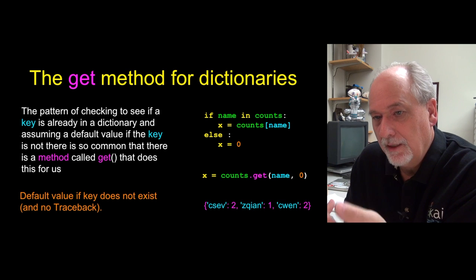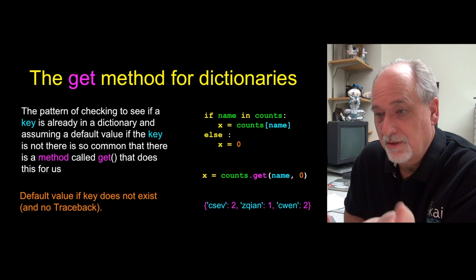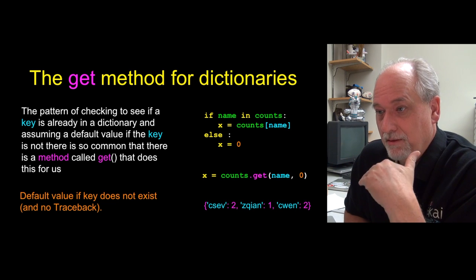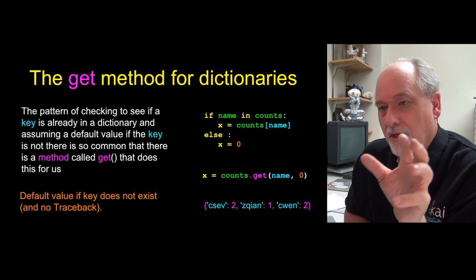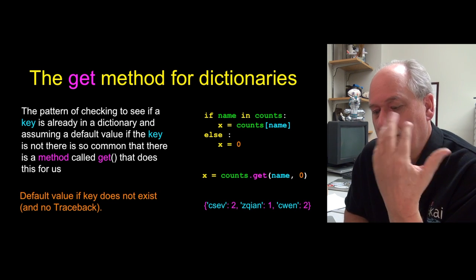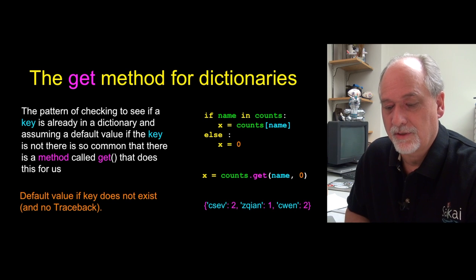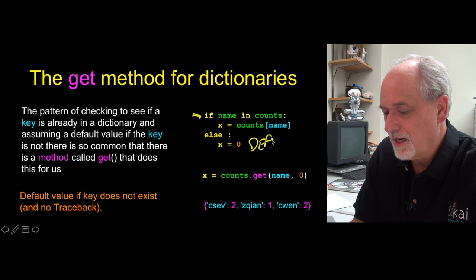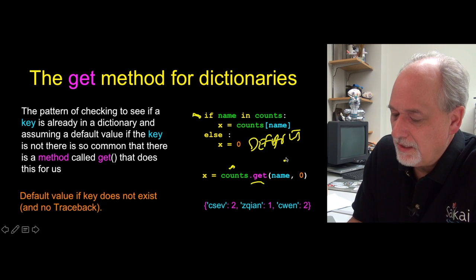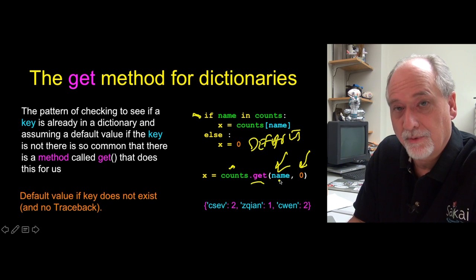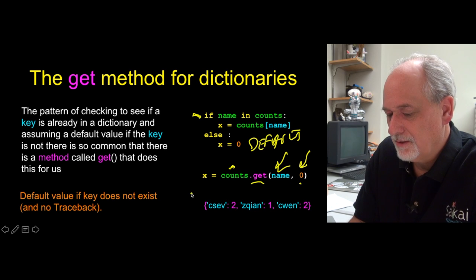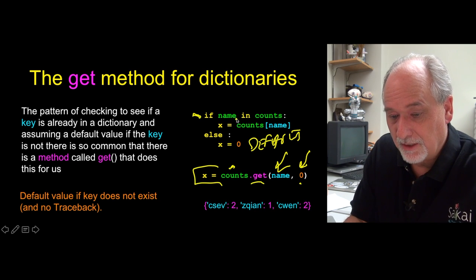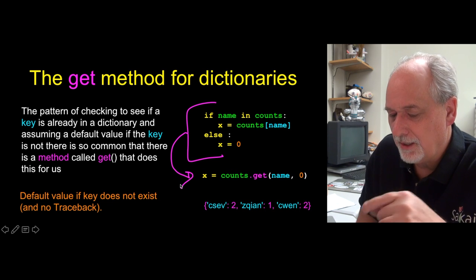Now, this notion of checking to see if a key exists, and doing one thing if it doesn't exist, and doing another thing if it does exist, is such a common practice that the dictionary object has this method called get that collapses these four lines into one line. The idea is you're going to do one thing if it's in there, and you're going to retrieve the current thing. Otherwise, you're going to pick a default value. In this case, we'll pick zero. This is like the default, meaning what is not there. And if you say counts, now counts is a dictionary, dot get - that's like string dot upper, that's a method. You give it a key, and then a default. And if the key exists, you get back what's in the key. If the key doesn't exist, you get the default. And with no traceback. This works.